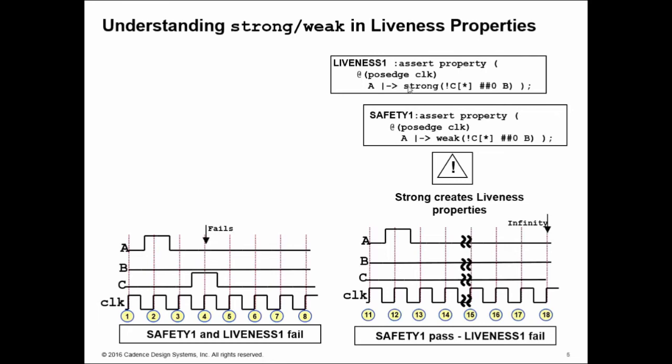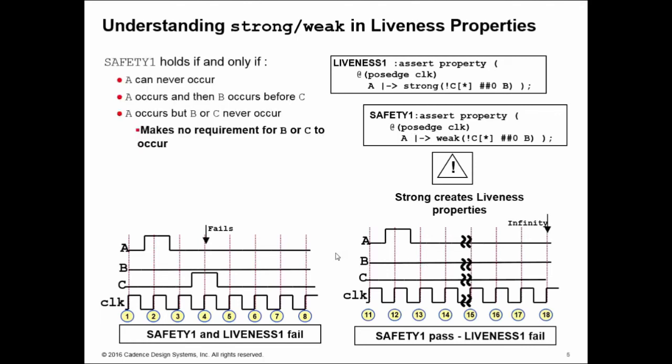These keywords were introduced and the concepts of strong/weak were introduced in the 2009 LRM and are still present in the 2012 LRM. We've modified these properties slightly. We've got two now with different labels, one says strong and one says weak. What I'd recommend you to do is always use strong and weak keywords to indicate what's really intended. Liveness one will fail under both circumstances. For the one where we said weak, we're not requiring B to ever occur. So this set of waveforms will not cause the property named safety one to fail.